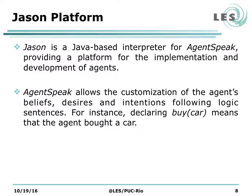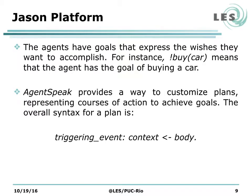The agent expressing this work was implemented using the Jason platform. Jason is a Java-based interpreter for AgentSpeak, providing a platform for the implementation and development of agents. AgentSpeak allows the customization of the agent's beliefs, desires, and intentions following logic sentences. For instance, declaring 'buy a car' means that the agent believes he bought a car. If you put an exclamation mark before 'buy a car', that means the agent has the goal of buying a car.